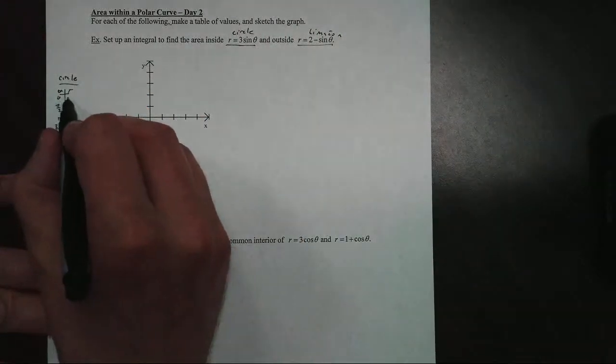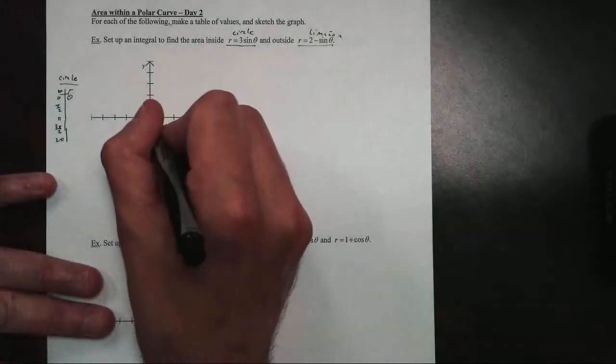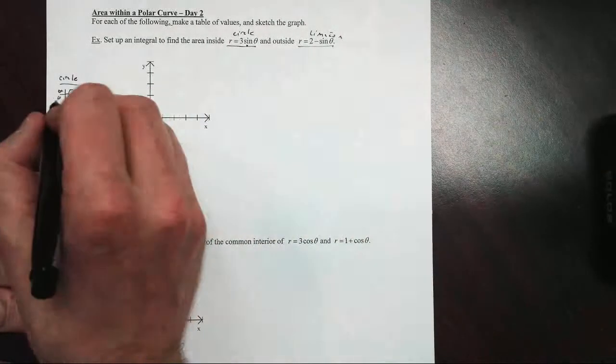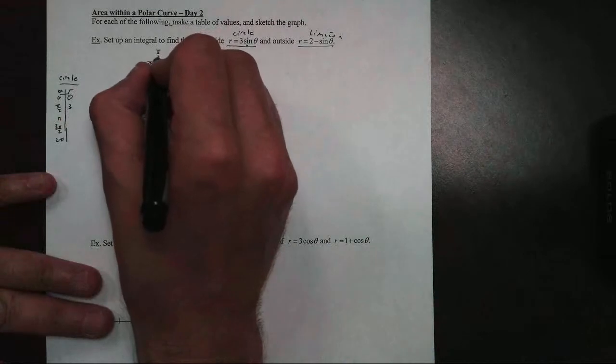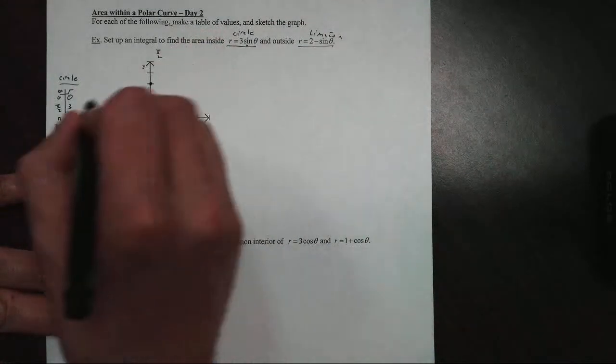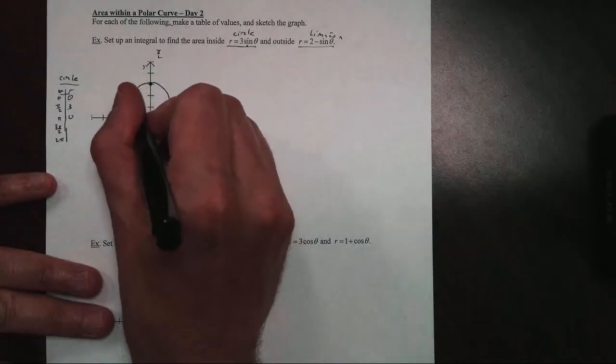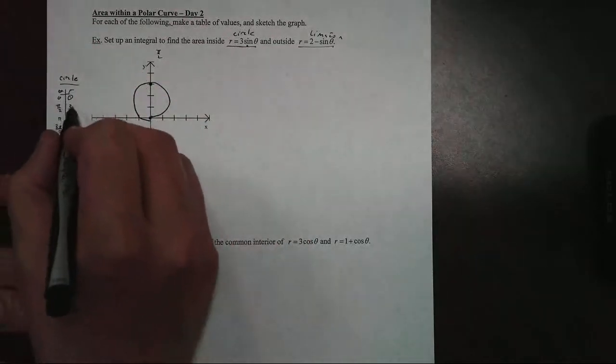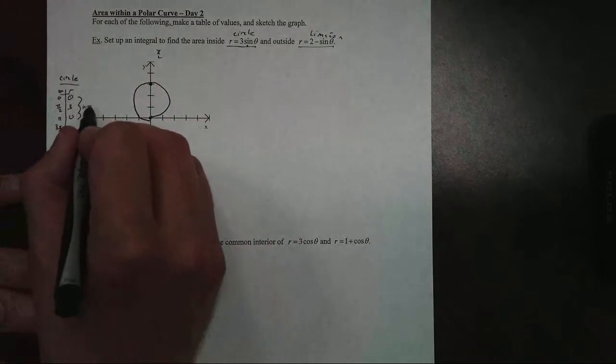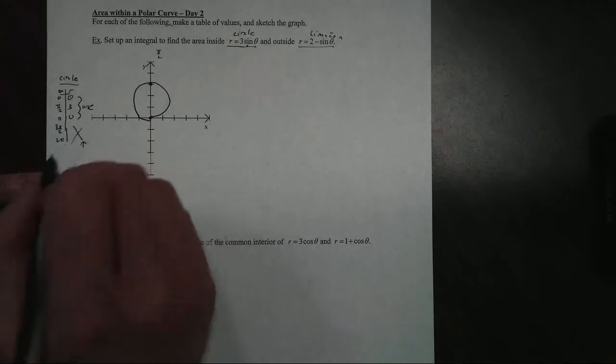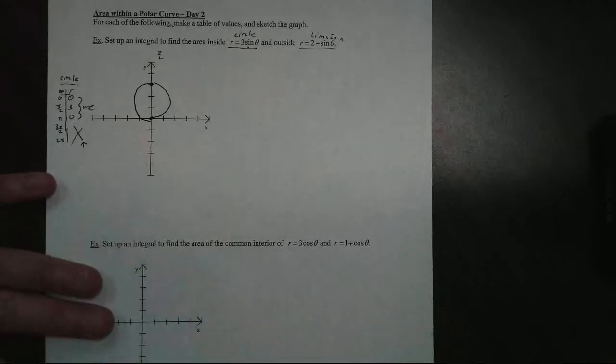When you're graphing a circle, if we let theta be zero, we know the sine is zero, so we start here at the pole. At pi over two, the sine of pi over two is one, gives me a radius of three. So we're up three—one, two, and three—and we're back to zero. That's kind of interesting because we made one complete circle. So I don't need the rest because this is just going around the circle twice. We only want to go around the circle one time.